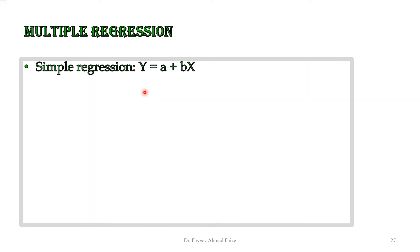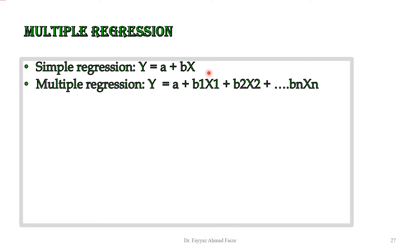We have simple regression or simple correlation because there are two variables. When we plot the graph in simple regression, we draw the line of best fit, and the equation of a straight line is y is equal to a plus bx. But in multiple regression, because there are different variables involved, the equation changes.